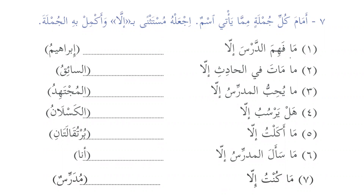Again we have 'ma' — so it will be mufarragun. When the kalam is mufarragun, we remove illa and determine the irab from the sentence structure. For example: 'No one understood the lesson except for Ibrahim' — we remove illa and Ibrahim is the doer of the action, so it will be marfoob.